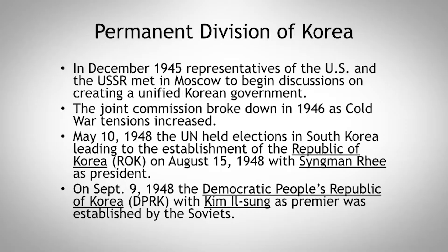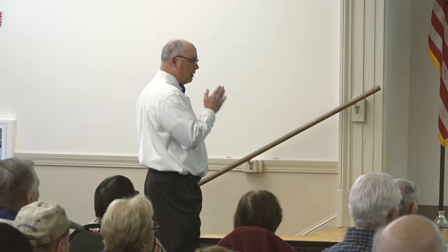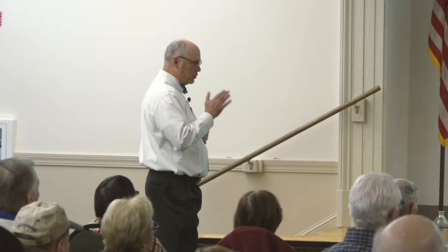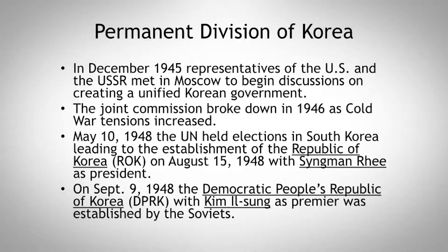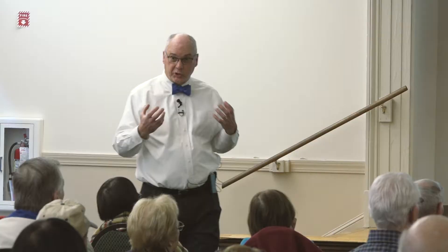In December 1945, representatives of the U.S. and the USSR met in Moscow to discuss creating a unified Korean government, but talks broke down in 1946 as Cold War tensions mounted. By May 10th, 1948, the UN held elections in South Korea leading to the establishment of the Republic of Korea, or ROK. On August 15th, 1948, Syngman Rhee was elected president. Following in September 1948, the Democratic People's Republic of Korea, the DPRK, with Kim Il-sung as premier, was established by the Soviets. We now have two official governments: one in the south, one in the north, separated at the 38th Parallel.